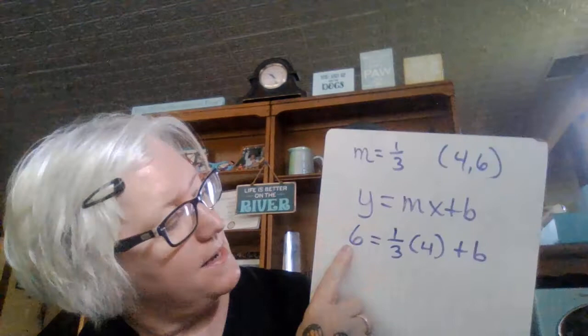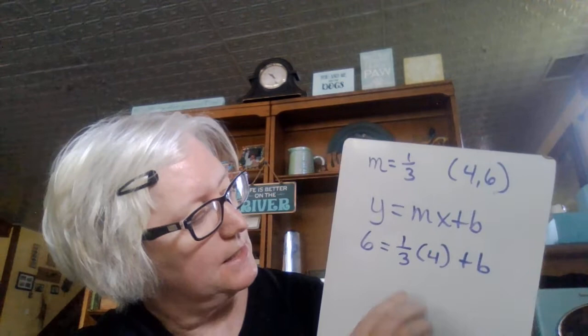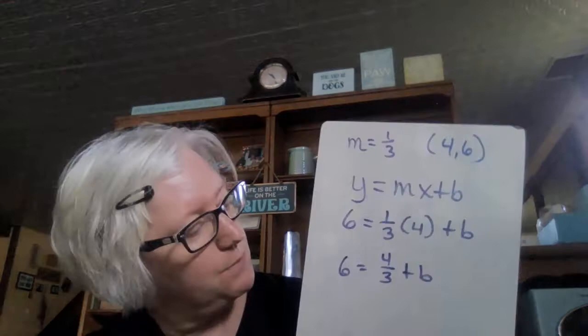So we're going to have to plug it into this equation. y equals mx plus b. My y value is 6. My y value is 6. My slope is 1/3. My x value is 4. So, I have y equals m times x plus b. Now, I do my math here. 1/3 times 4 is 4/3.